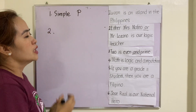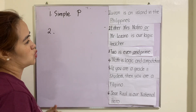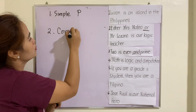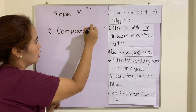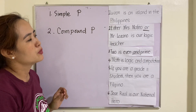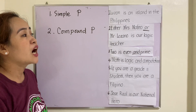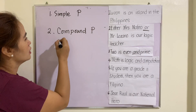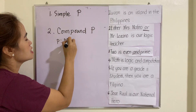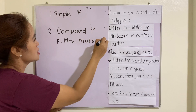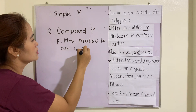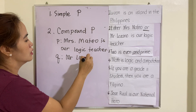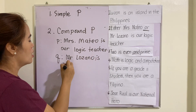Number two: 'Either Mrs. Mateo or Mr. Lozano is our logic teacher.' We use the word 'or' here, which is a connector or logical operator, therefore this one is a compound proposition. The two sub-propositional variables are: p - 'Mrs. Mateo is our logic teacher', and q - 'Mr. Lozano is our logic teacher.'